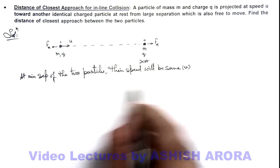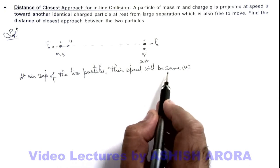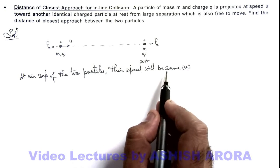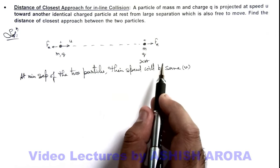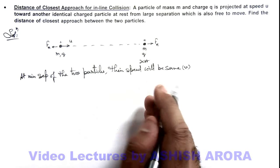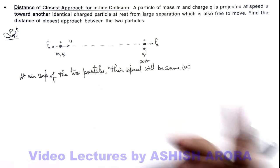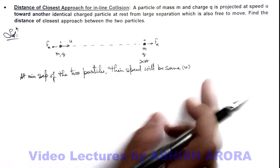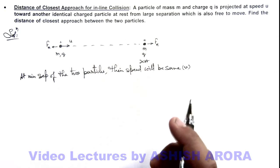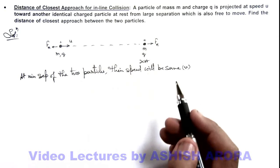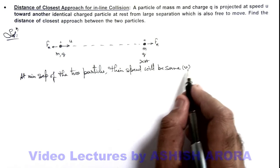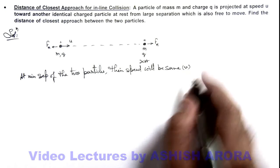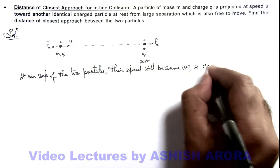Why am I taking the speed to be same? You can refer to the case of collisions, or head-on collisions between two particles where we have discussed, at the minimum separation the two will be moving at equal speed which is equal to the speed of center of mass of the system. As no external force is acting, if they are moving with the same speed v, it can be given as...